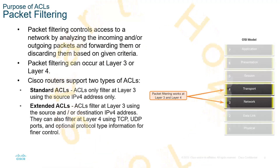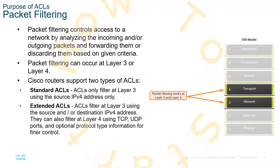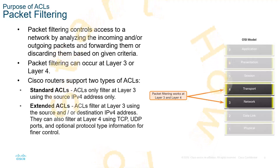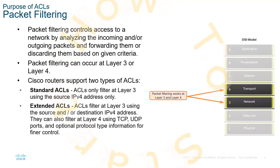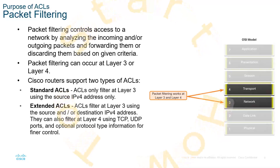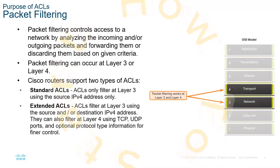Packet filtering works between layer 3 and layer 4. If we are looking at a standard ACL, they will filter at layer 3 and are only looking at source IP addresses. If we're looking at an extended ACL, they will filter at layer 3 using source and/or the destination address, but they can also filter based off of TCP or UDP ports. So extended ACLs operate between both layer 3 and layer 4.